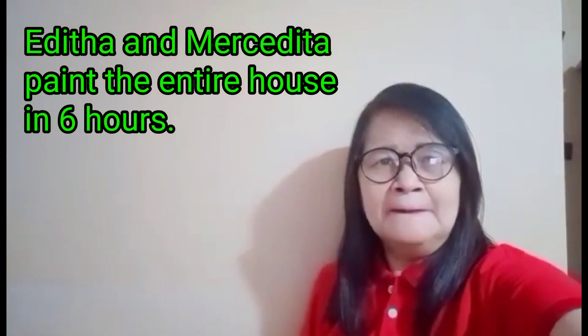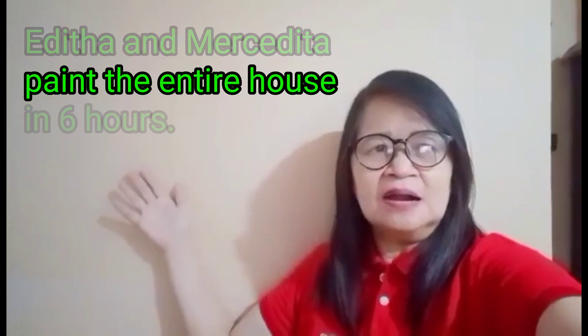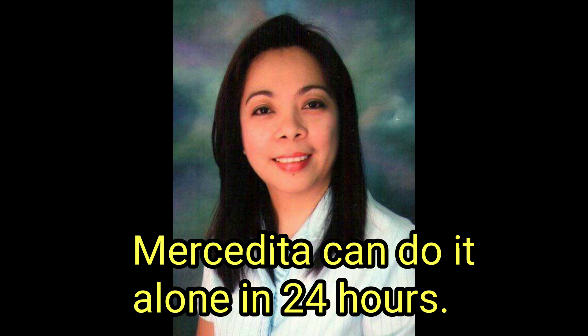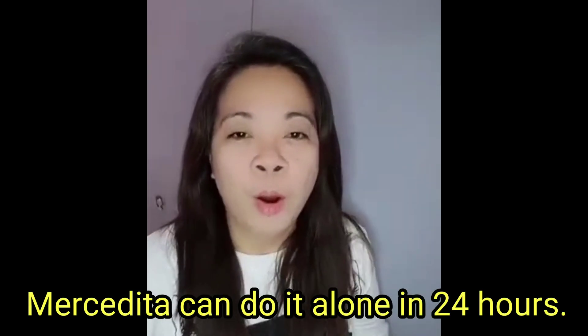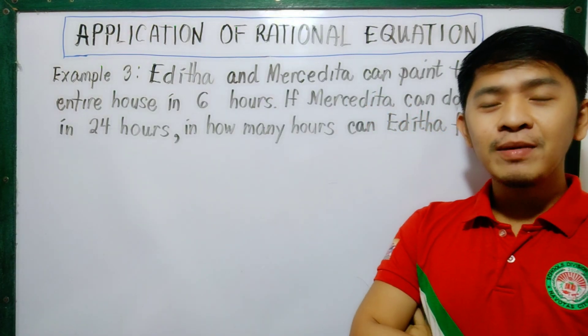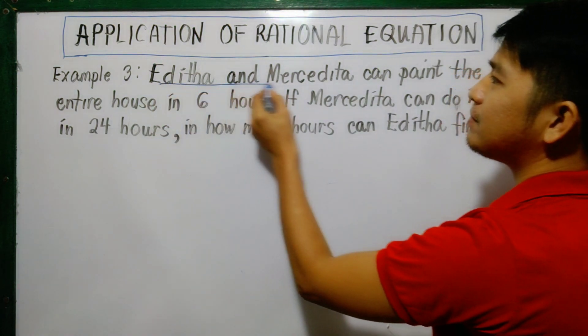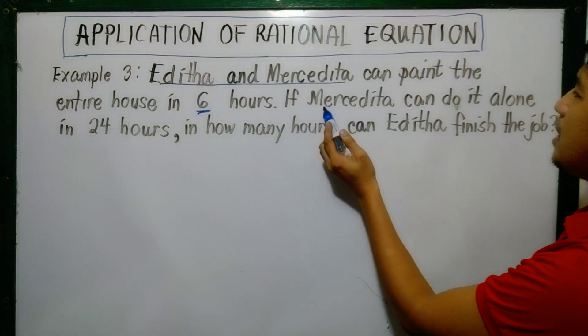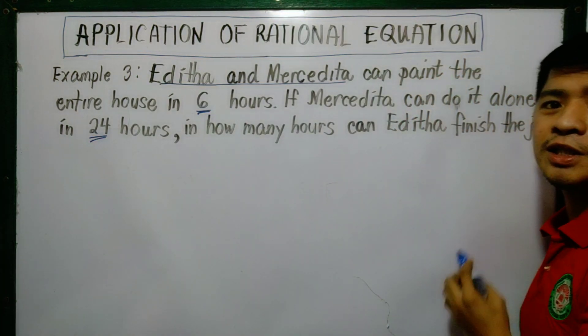Mercedita and I can paint this entire house in 6 hours. I can do it alone in 24 hours. So what if our problem is like this? Let's read it. Edita and Mercedita can paint the entire house in 6 hours. If Mercedita can do it alone in 24 hours, in how many hours can Edita finish the job?